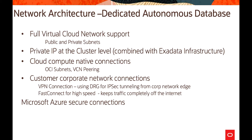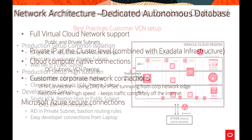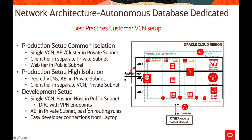You can also connect using FastConnect for higher speed, keeping traffic completely off the internet. With a recent addition, we have support for Microsoft Azure secure connections to Oracle Cloud Infrastructure. In terms of best practices for customer VCN setup, a production setup provides common isolation — you can have it deployed in a single VCN with clusters, everything in a private subnet.